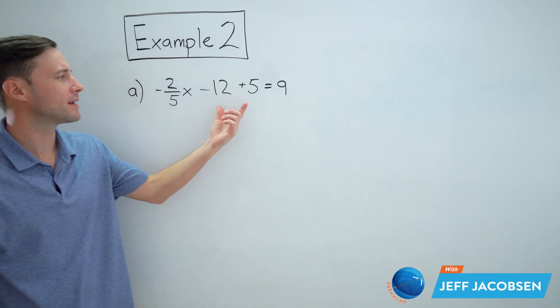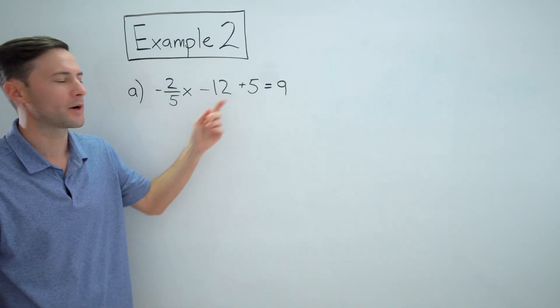So negative two-fifths x minus 12 plus 5 equals 9. Now with this one, you'll notice we've got another term here. Before we only had two terms, now we got one more.